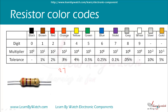Then the third one is brown. Brown is the multiplier, which means the value will be multiplied by this value. For brown, it will be multiplied by 10 to the power 1. So it will be 270 ohm — its value is 270 ohm.